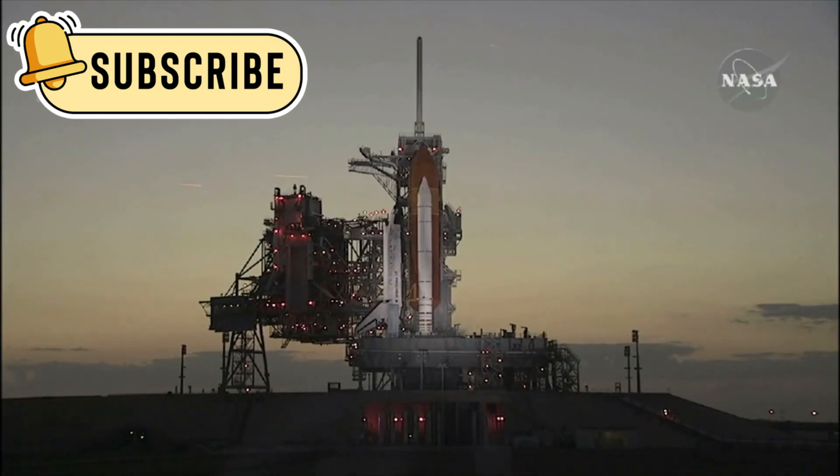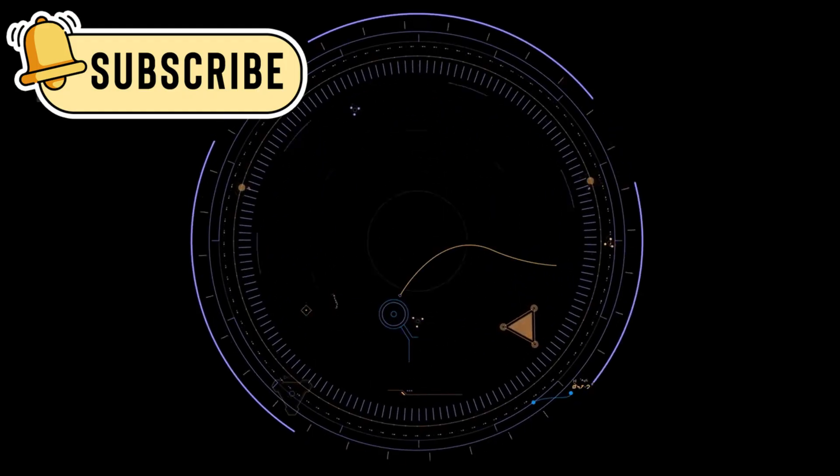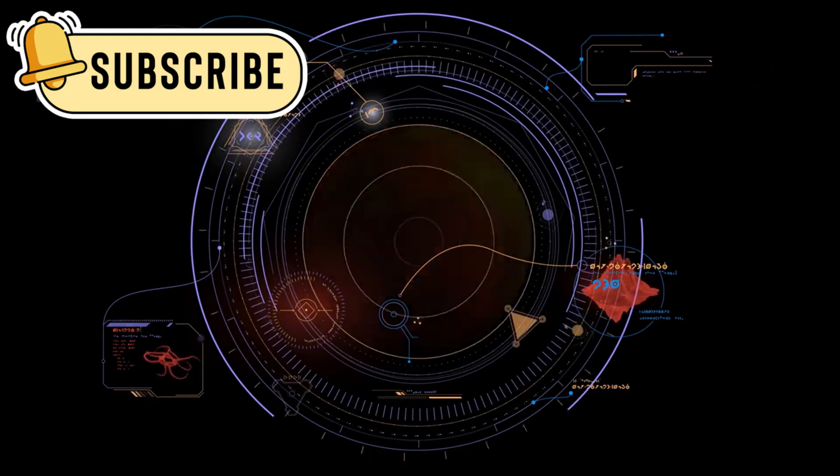On September 5, 1977, NASA launched Voyager 1 on a mission that would change space exploration forever. It was built to study the outer planets and send back data no one had ever seen before.